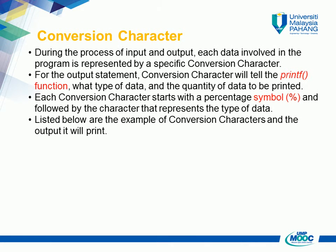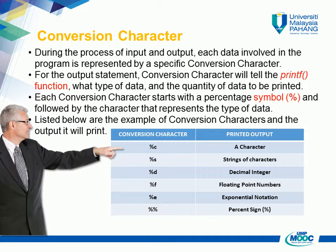Conversion Character: During the process of input and output, each data involved in the program is represented by a specific conversion character. For the output statement, the conversion character tells the printf function what type of data and quantity of data to be printed. Each conversion character starts with a percentage symbol % followed by the character representing the data type. Examples: %c (character), %s (strings of characters), %d (decimal integer), %f (floating point numbers), %e (exponential notation), %% (percent sign).